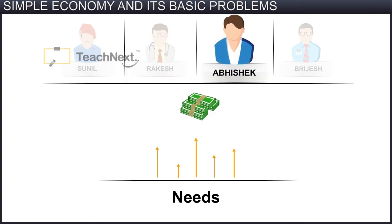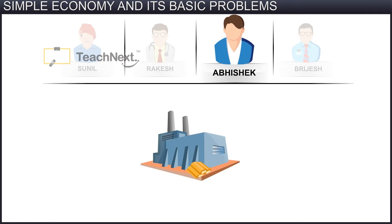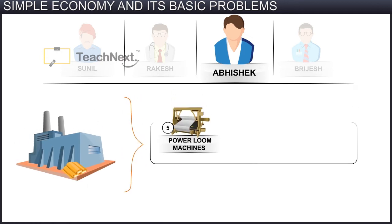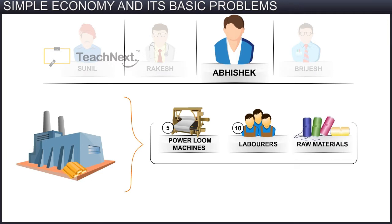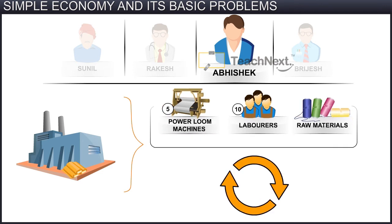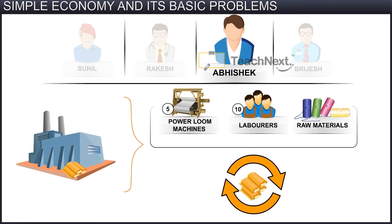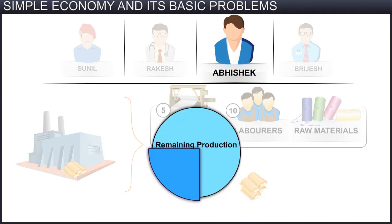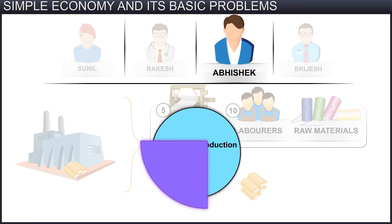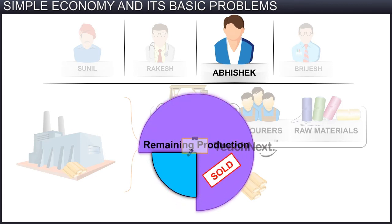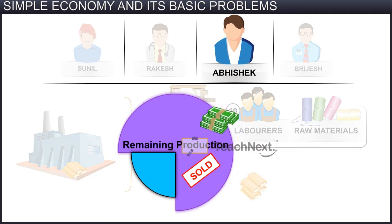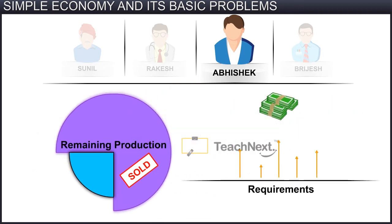Next, Abhishek is the owner of a textile firm. He has five power loom machines, ten labourers, and raw materials in the form of yarn. With the help of the labourers, machines, and raw materials, his firm produces clothes. Abhishek may keep some of the clothes produced for himself and his family, while the remainder is sold in the market. With the money earned from sales, he satisfies his other requirements.